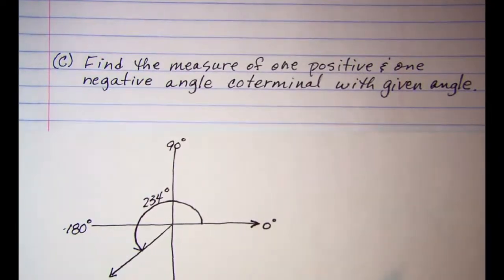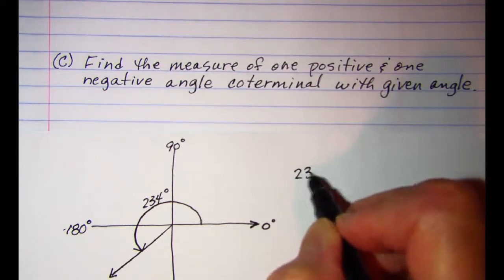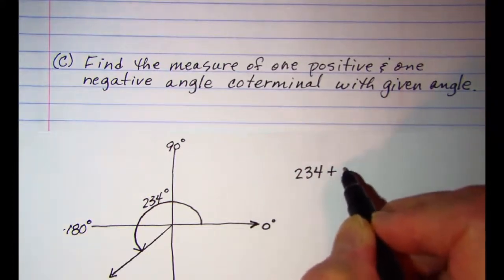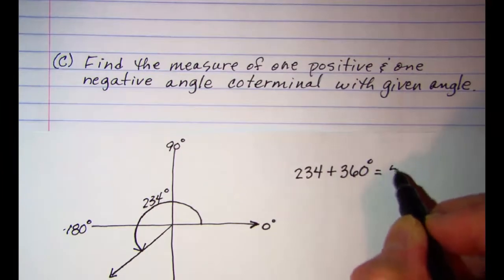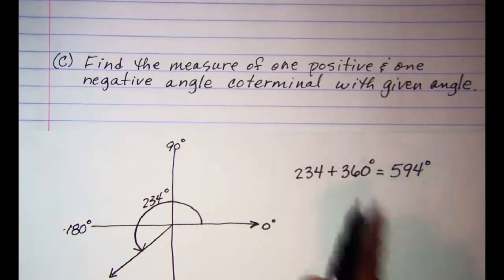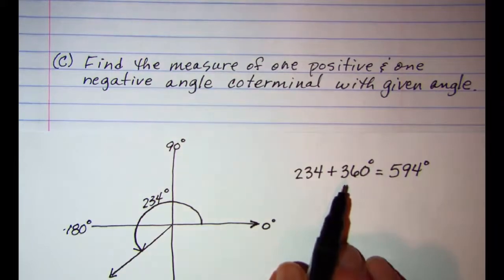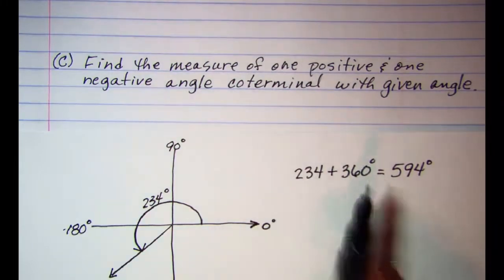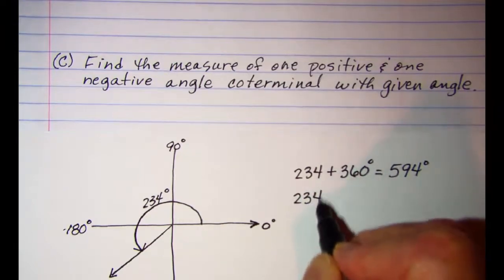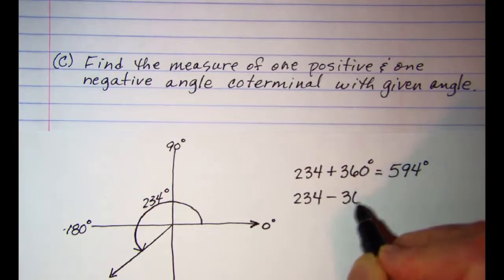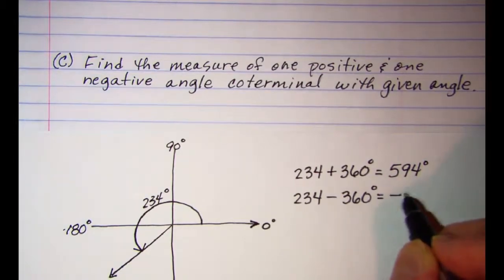The next thing we're asked to do is find the measure of one positive and one negative angle coterminal with this given angle. To get a positive angle, we take our 234 and add a complete revolution of 360 degrees, giving us a positive angle of 594 degrees. To get a negative angle, we start with 234 and subtract one revolution: 234 minus 360 gives us negative 126.